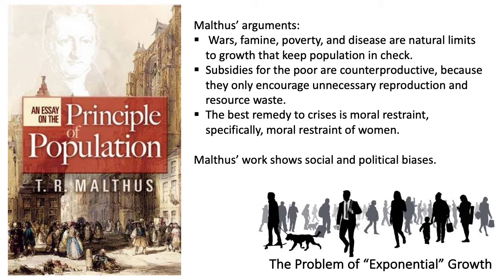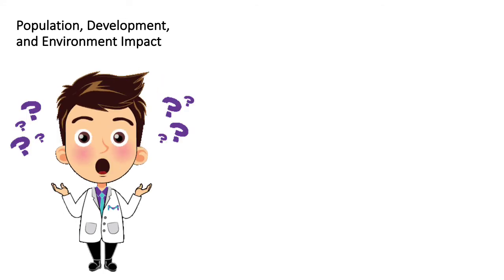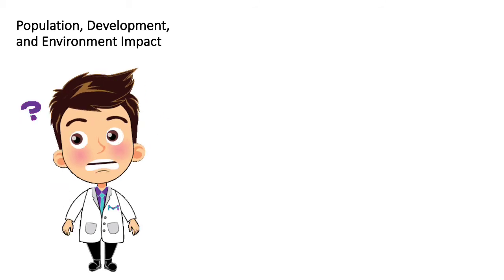Malthus' work shows social and political biases. He developed an explanation for poverty that excuses economic systems, political structures, or the actions of the wealthy or elite from fault. His specific moral vision of women, perhaps even by the standards of his own time, reflects a profoundly biased view of the relationship between women and men. The arguments of Malthus and his present-day followers raise questions about the relationship between society and environment, the nature of resource scarcity, its possible inevitability, and our capacity to overcome it. The questions raised by Malthus have been taken up by other scholars interested in relationships between population, economic development, and environmental impacts.